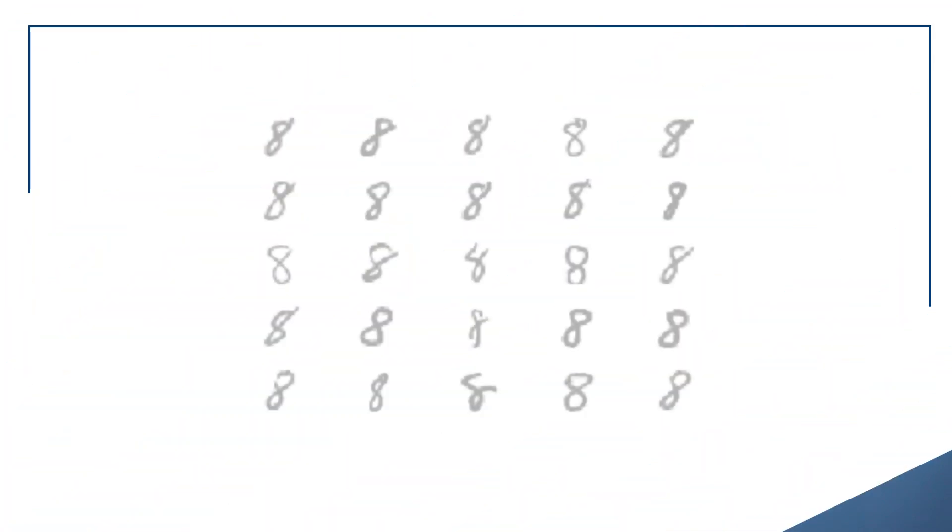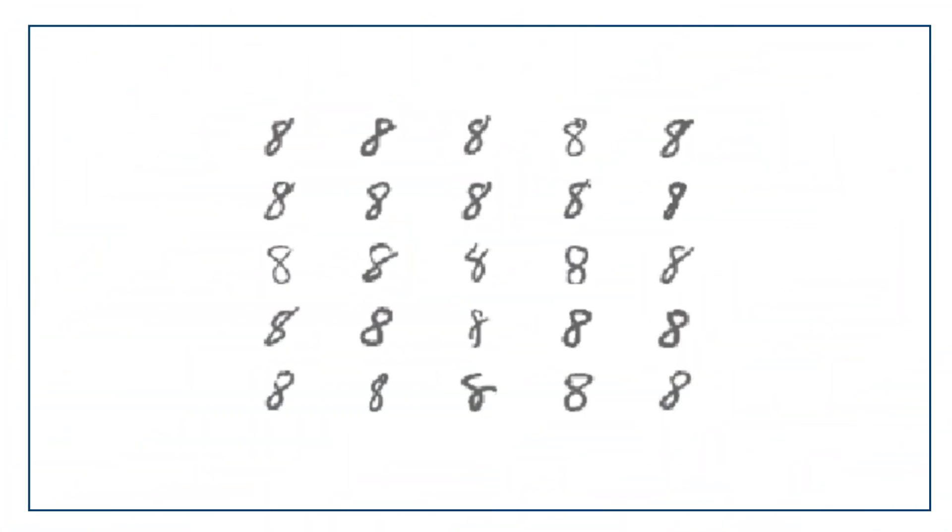For example, if we look at a set of images of digit 8, the average image looks like this. It has properties of all images in the dataset, but it is not part of the dataset itself.